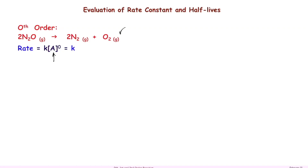Some of you might wonder why the order is zero and not two, since the coefficient in the balanced equation is two. The order has nothing to do with stoichiometry. Stoichiometry relates one chemical to another, but the order is not determined by the stoichiometric coefficient. Please keep that in mind.